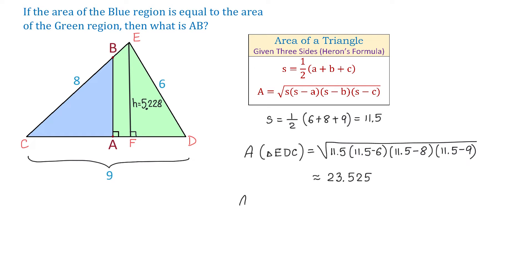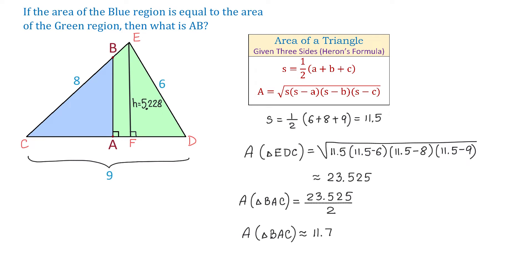Now the area of triangle BAC, which is the blue triangle, is going to be half of the area of triangle EDC. So 23.525 divided by 2 gives the area of triangle BAC as approximately 11.763. I will copy this to the left for later use.